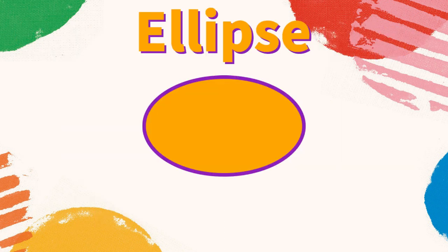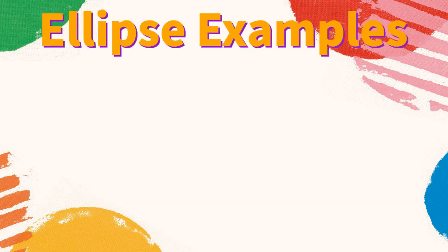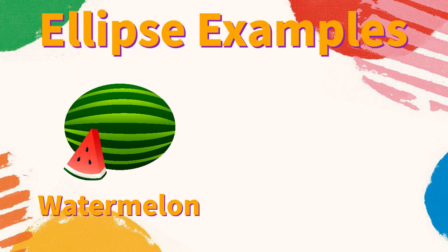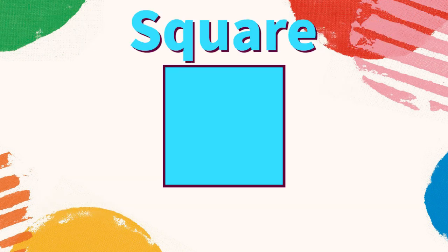Ellipse: an ellipse has zero sides and zero vertices. What are some examples of ellipses? A watermelon is an ellipse, an egg is an ellipse. What are other examples you can think of?